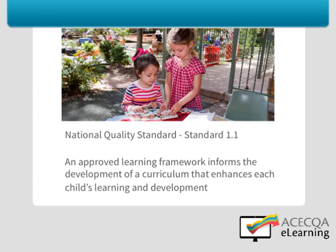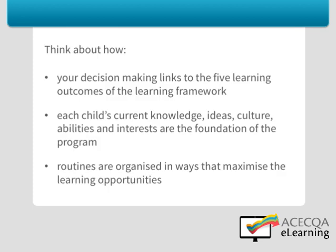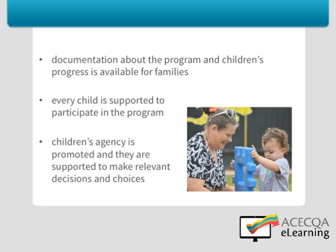For example, I'd like to draw your attention to Standard 1.1 — that is, an approved learning framework informs the development of a curriculum that enhances each child's learning and development. To meet this standard, consideration must also be given to each of the six elements. It is important to think about how your decision making links to the five learning outcomes of the learning framework. Each child's current knowledge, ideas, culture, abilities and interests are the foundation of the program. Routines such as afternoon tea are organised in ways that maximise the learning opportunities. Documentation about the program and children's progress is available for families. Every child is supported to participate in the program, and children's agency is promoted so they are supported to make relevant decisions and choices.